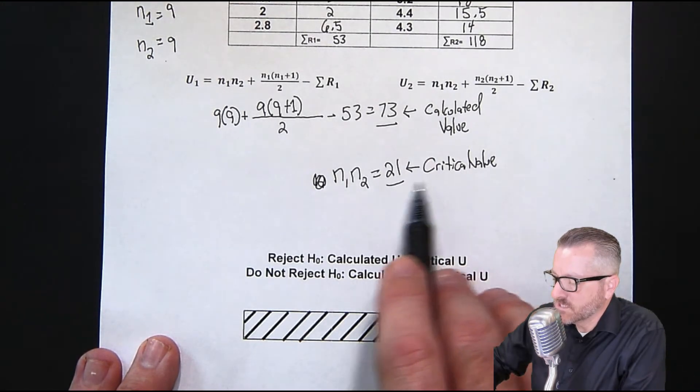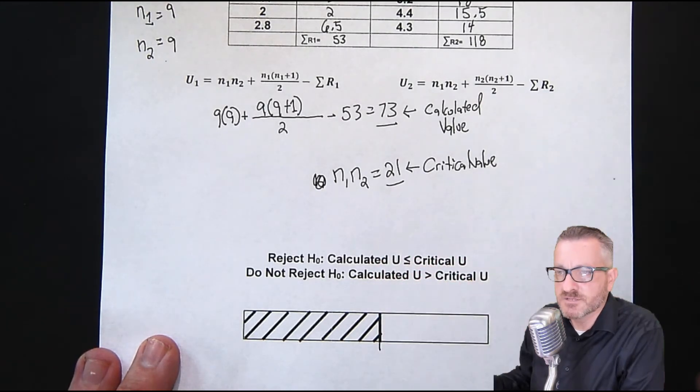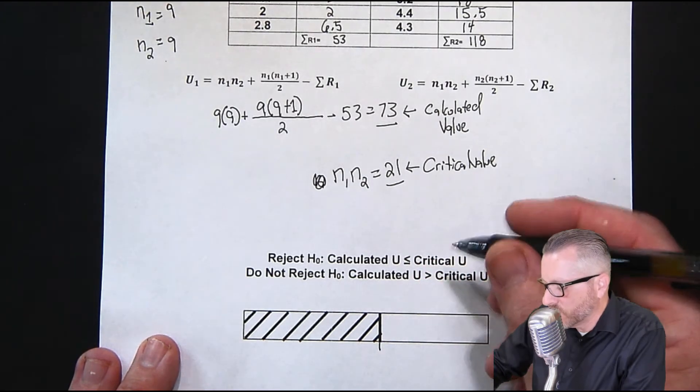So we're going to first place our critical, right here. So this is going to be critical. The critical is always placed right at the border of the rejection zone. So the critical is 21.